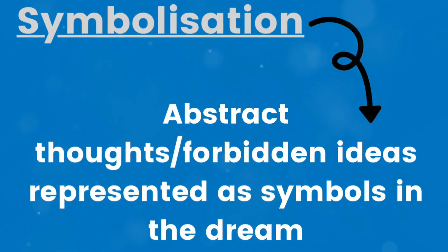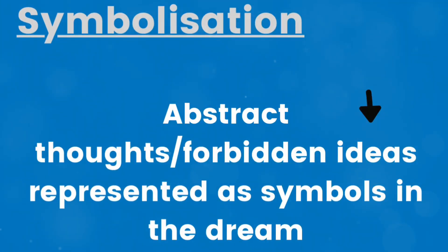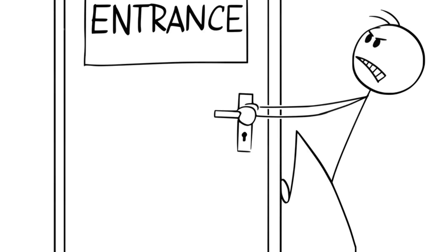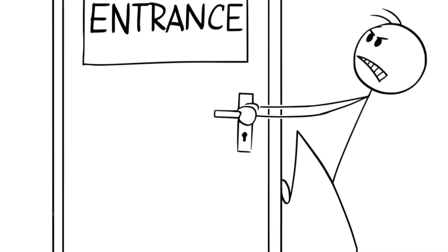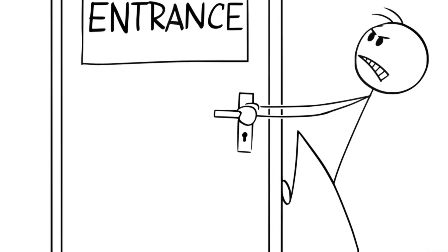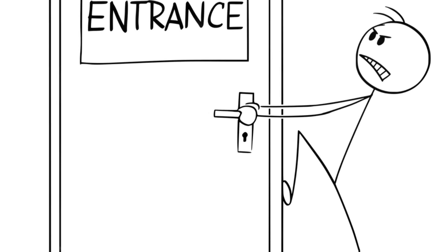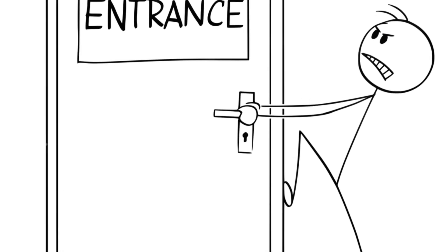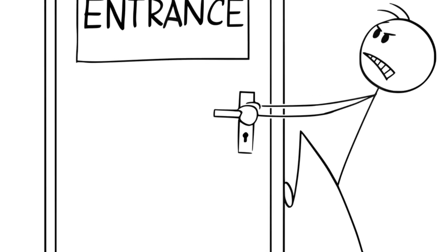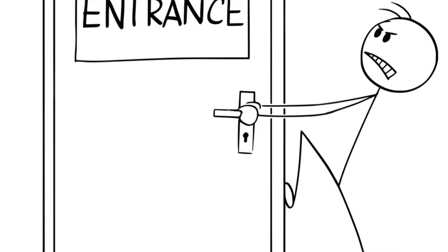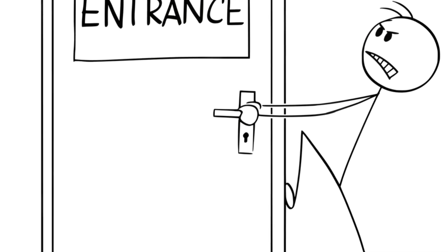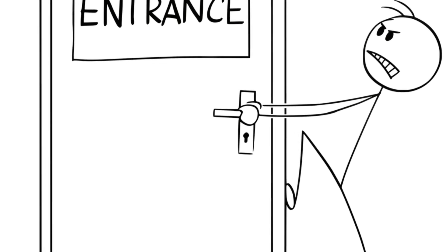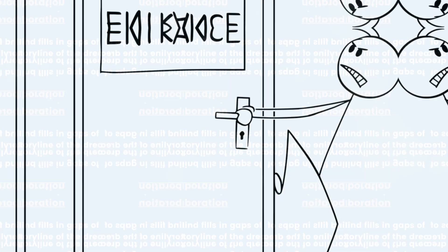Symbolisation. Abstract thoughts or forbidden ideas are represented by symbols. An example might be dreaming of a locked door, which could symbolise hidden thoughts or emotions the dreamer feels they cannot express.